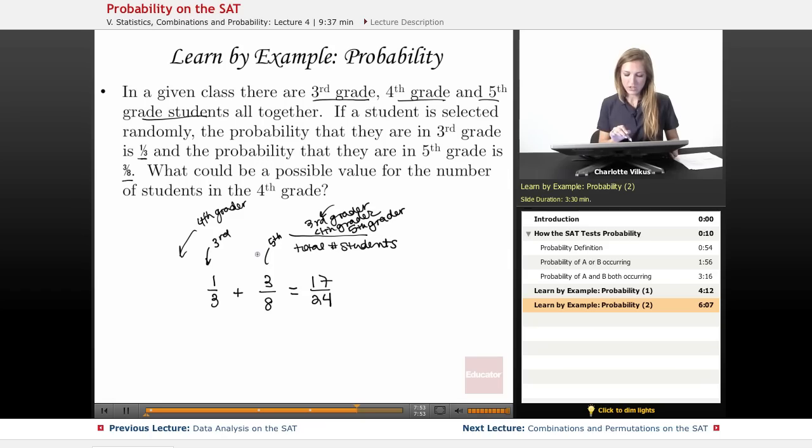So given that this is my probability, this is really 3rd and 5th graders. So that's how I could satisfy that I'm picking one of these two over the total number of students.